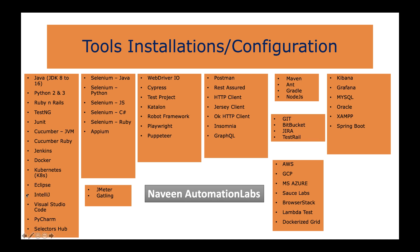Then how to set up Jenkins, what are different ways to set up and install Jenkins, Docker, Kubernetes, and then some editor tools like Eclipse, IntelliJ, Visual Studio Code, PyCharm, and Selectors Hub — we will also talk about features of Selectors Hub on Google Chrome or different browsers, how to use them, how to get the XPath and CSS, and how to create your own custom locators with the help of Selectors Hub.